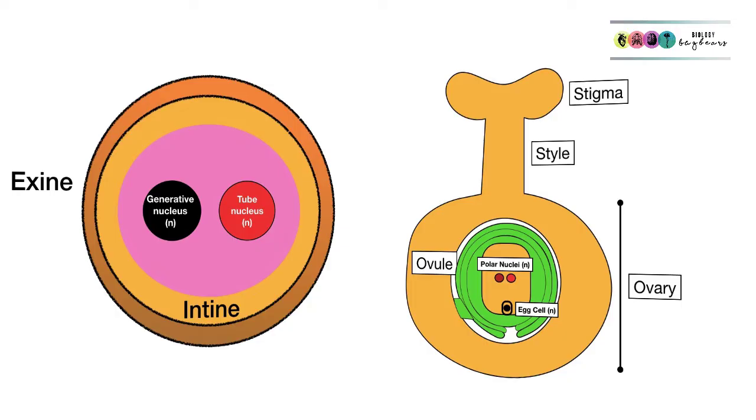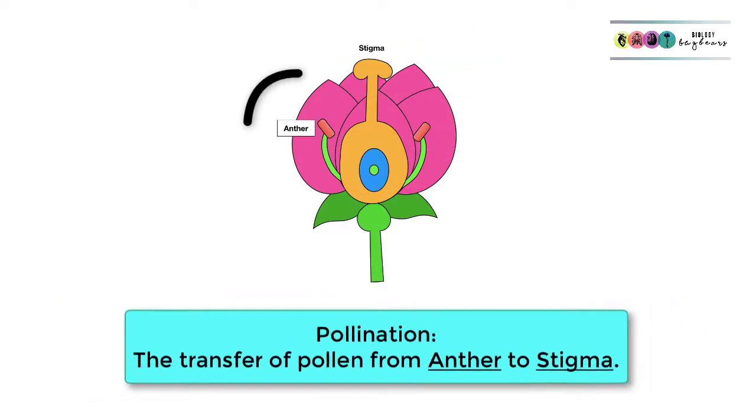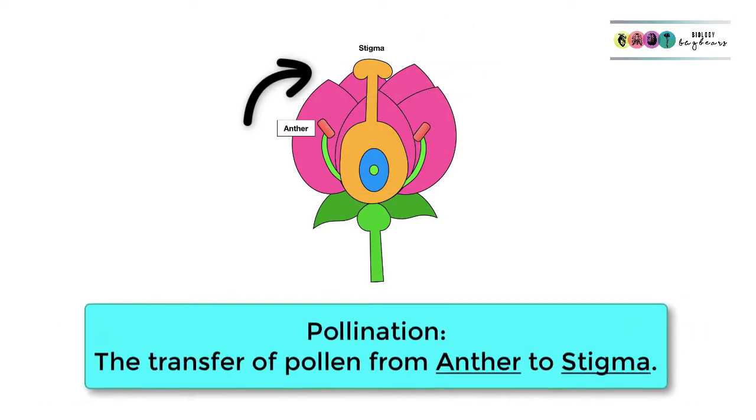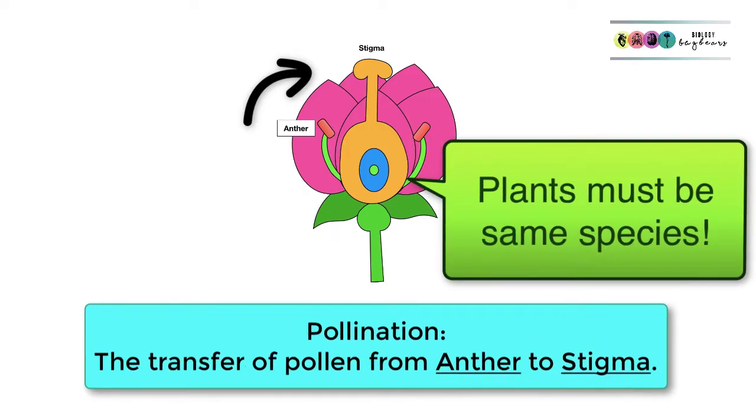The next stage is the transfer of that pollen grain to the female part of the flower, the stigma of the carpel. Remember that you must know how to define pollination: the transfer of pollen from anther to stigma.